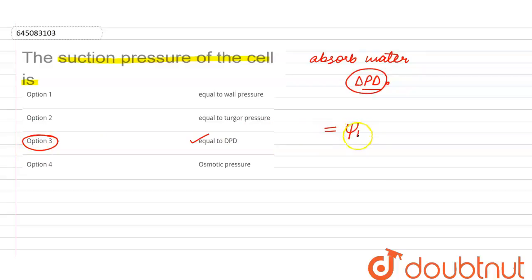While DPD is taken as ψW which is equal to ψS plus ψP, where ψS will be taken as the solute potential whereas ψP is taken as the pressure potential.